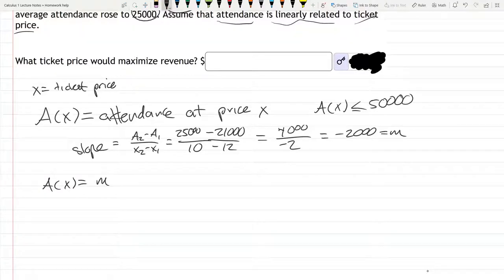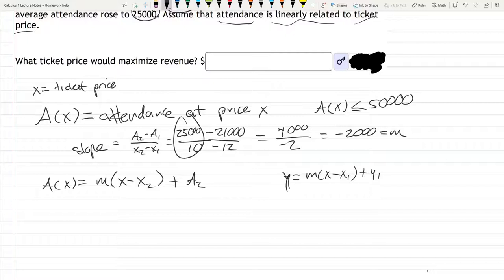I don't like MX plus B form, so I'm going to write it in point-slope: A(X) equals M times X minus X2 plus A2. I'm using X2 and A2 because they're easier to work with. This is the same as Y equals M(X minus X1) plus Y1. So negative 2,000 times X minus 10 plus 25,000. I circled them right here.